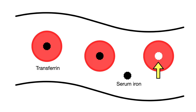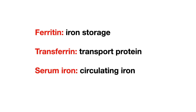Let's recap what we just covered. We've already covered three different lab results found on an iron panel: first is ferritin, which is your iron storage; then we have transferrin, which is your transport protein; and finally we have serum iron, which is a measure of our circulating iron.